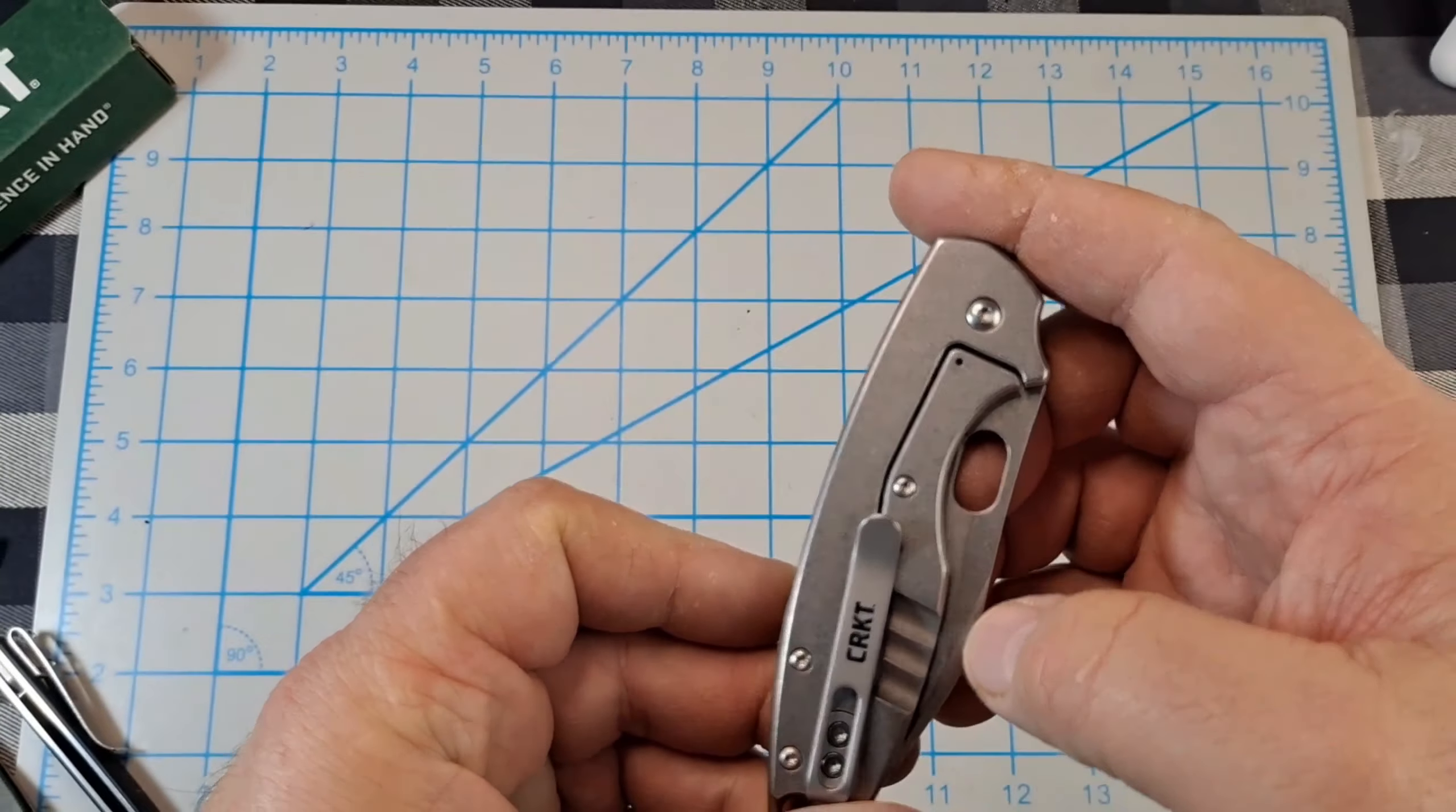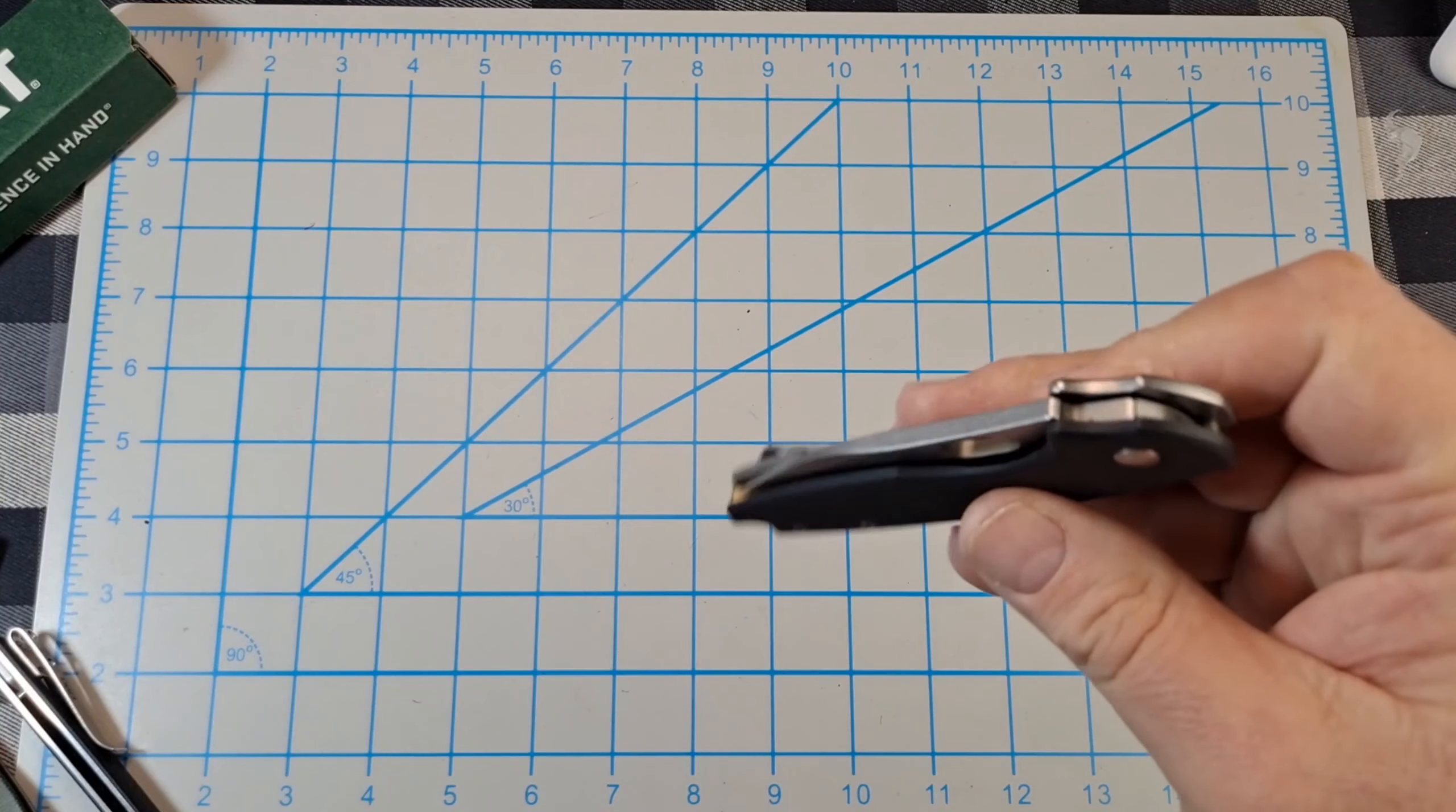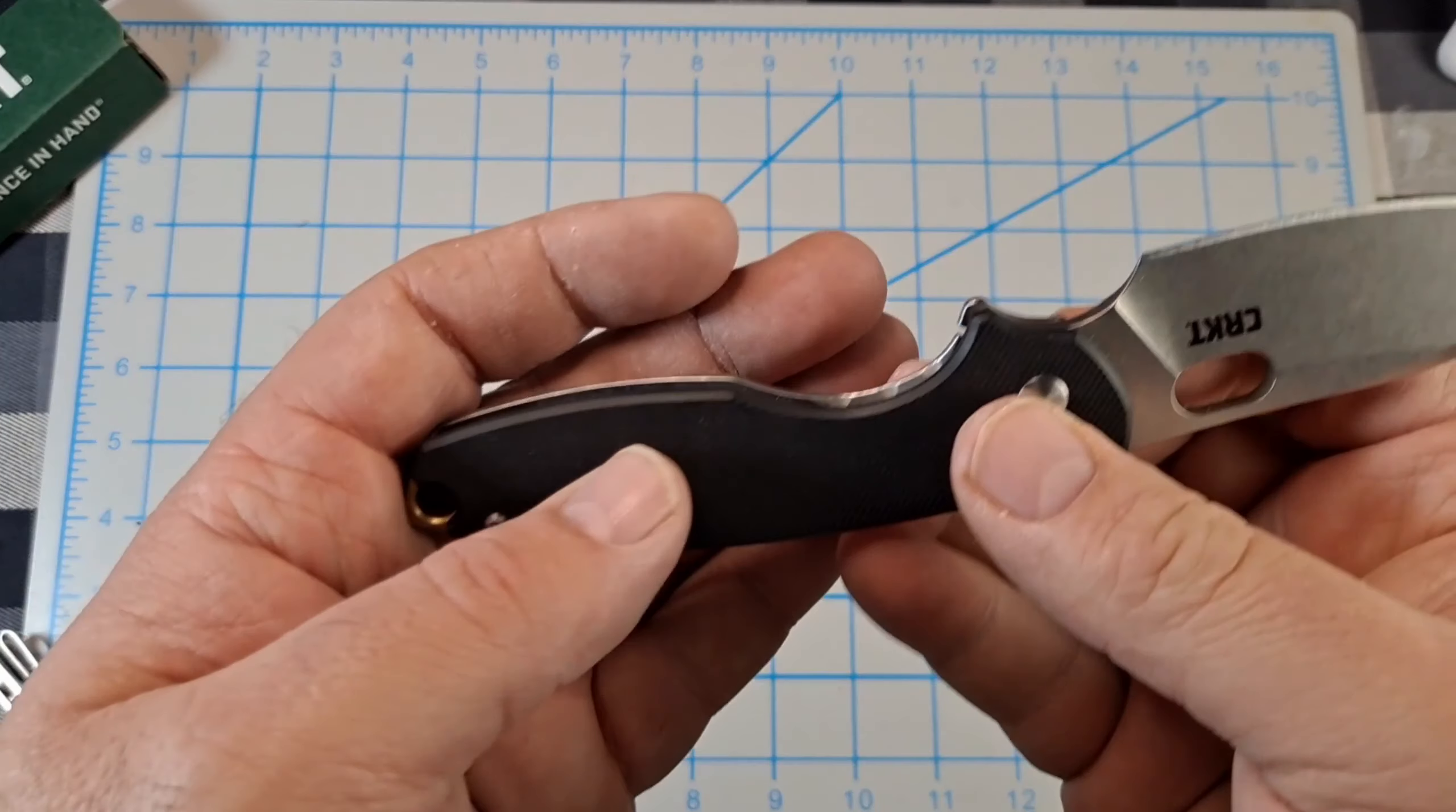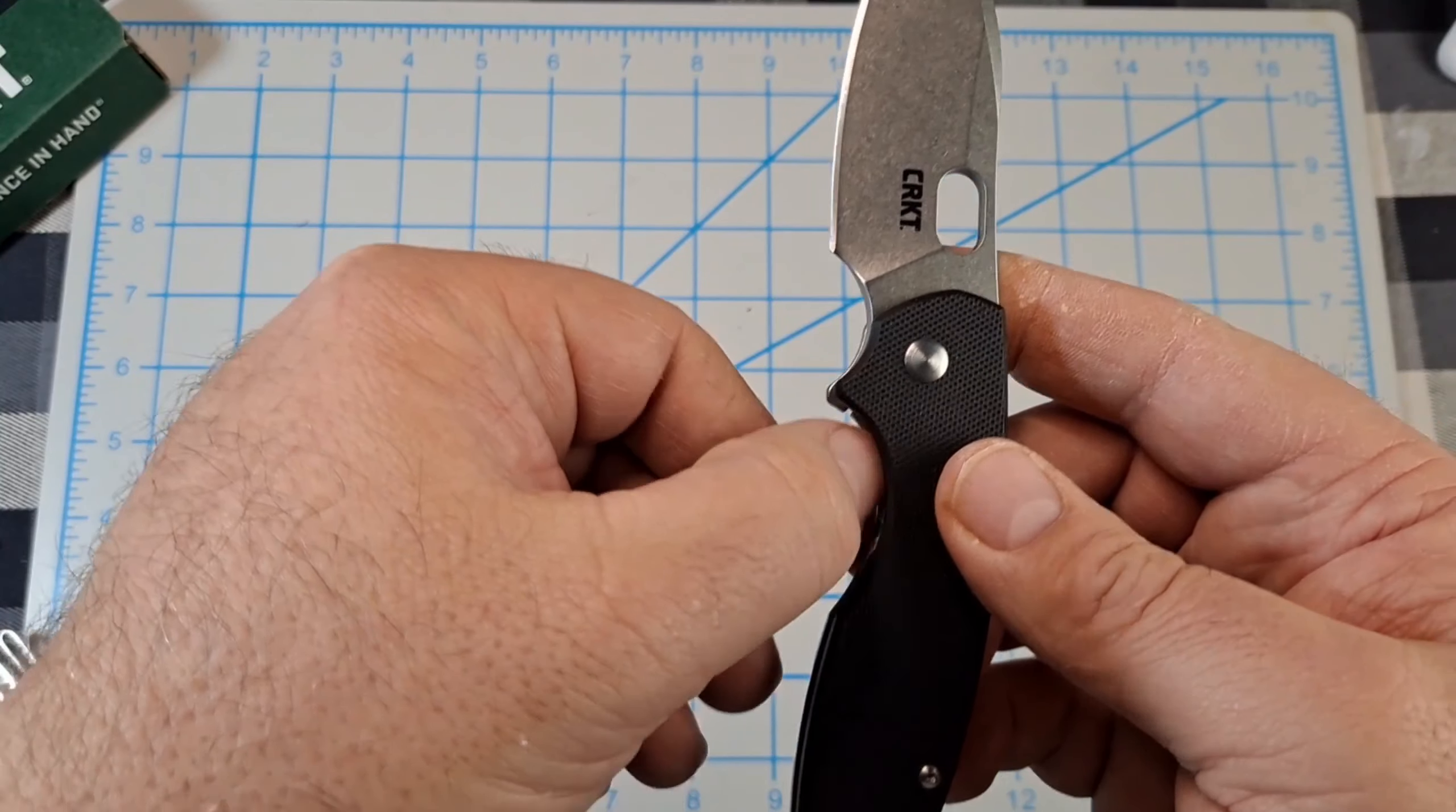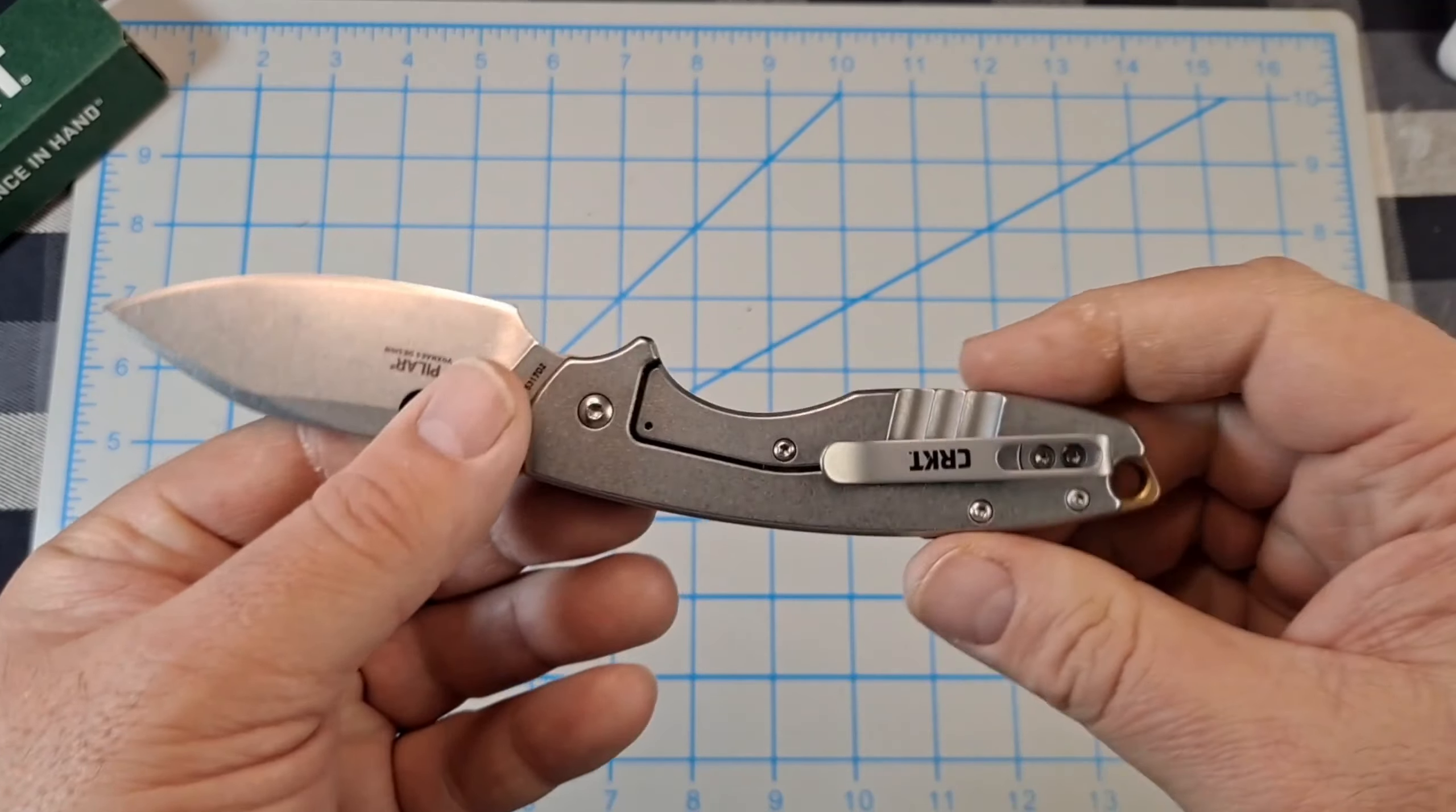You can slow roll this thing out, but the G10's cut out just a little bit and there's kind of like a little scalping done on the lockbar, so it's easy to unlock.